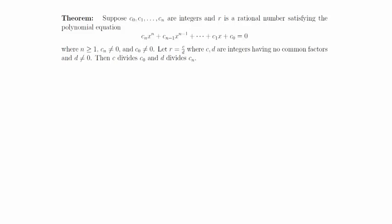Theorem: Suppose c₀, c₁, up to cₙ are integers, and r is a rational number satisfying the polynomial equation cₙx^n + cₙ₋₁x^(n-1) + ... + c₁x + c₀ = 0, where n ≥ 1, cₙ ≠ 0, and c₀ ≠ 0.